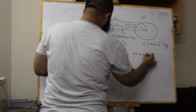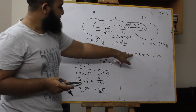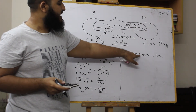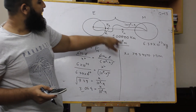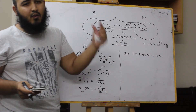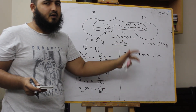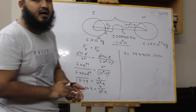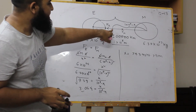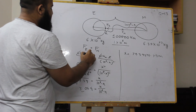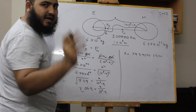The answer is 7,539,370.79 meters. So this is the distance from Earth at which our unit mass point object is located.